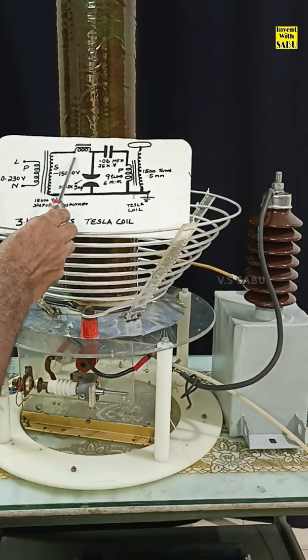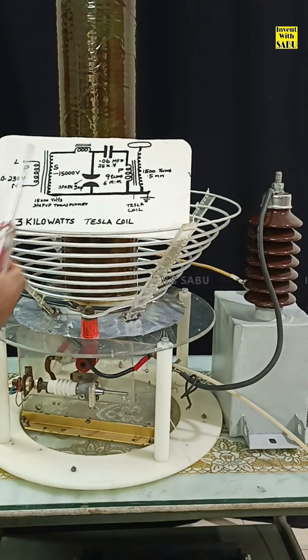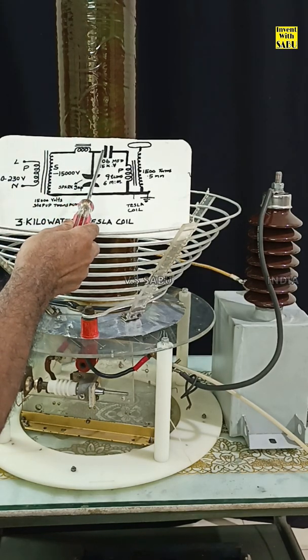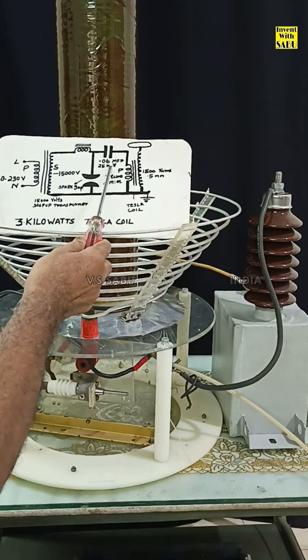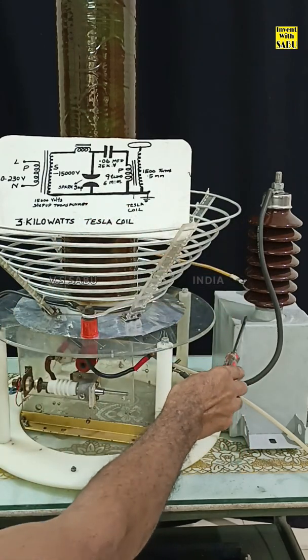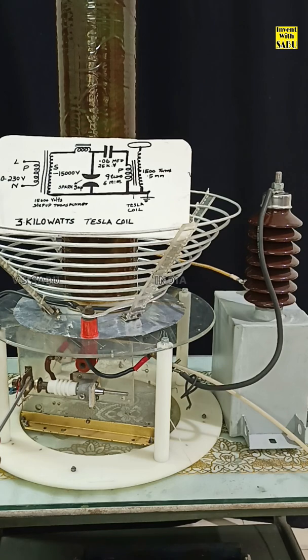This part is actually a current limiting choke, connected to a capacitor which value is 0.06 MFD at 33000 volts. This one. And two spark points is here. This tube.